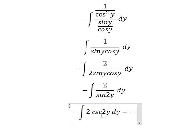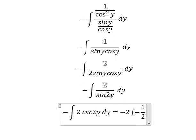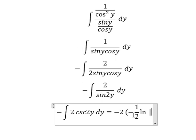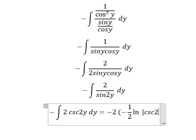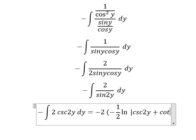So the integration of this one, we have negative one over two ln of the absolute value of cosecant of 2y plus cotangent 2y.